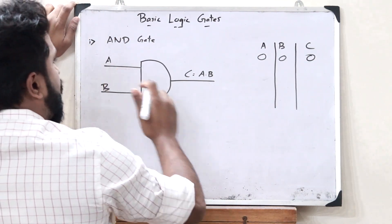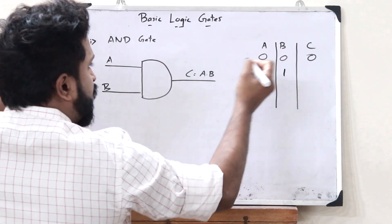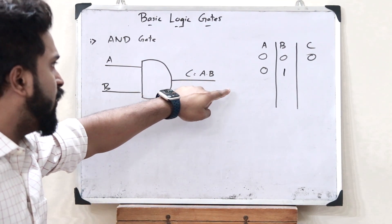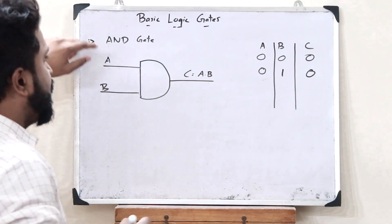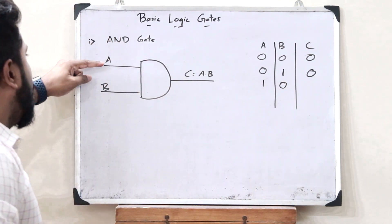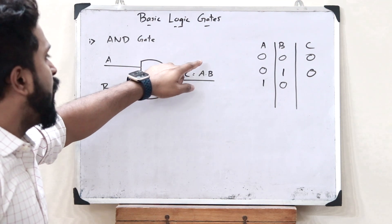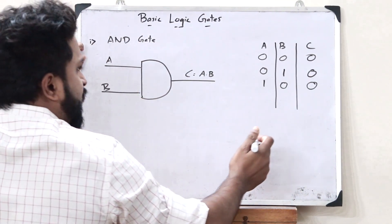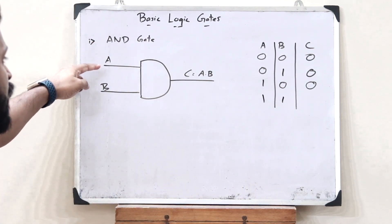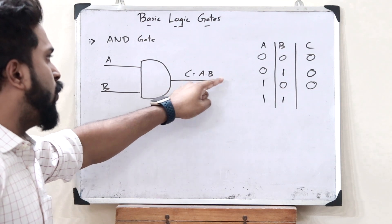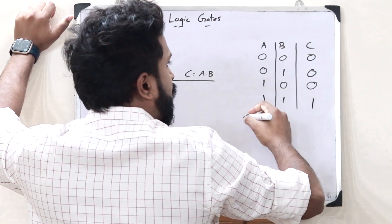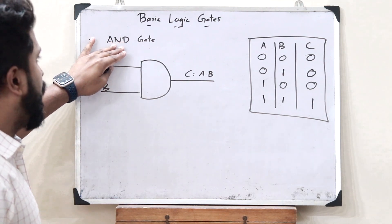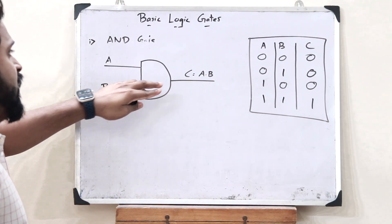Next, let us assume A is equal to 0 and B is equal to 1. When we give 0 and 1, the output C is equal to 0 dot 1, which is 0. Now, if A is 1 and B is 0, we get C is equal to 1 dot 0, which is 0. Finally, when both inputs are 1, C is equal to 1 dot 1, which is 1. This is the truth table of an AND gate.